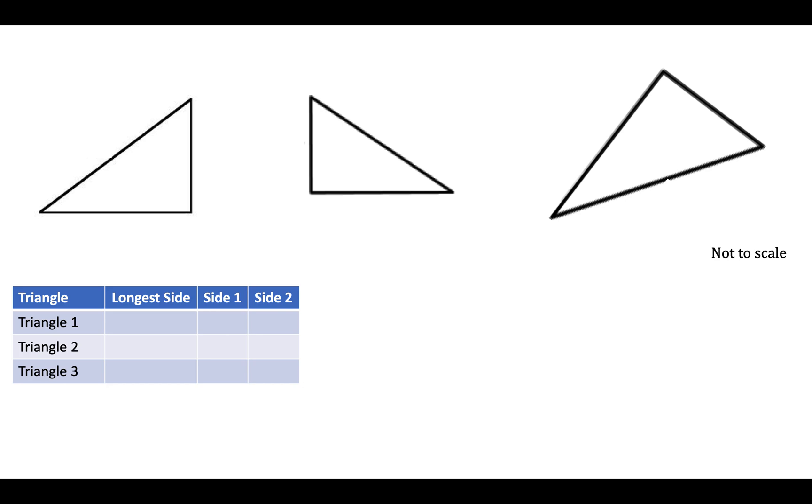If we look at each of these triangles separately and examine the lengths of the sides, I'm just going to tell you what the lengths are. For triangle one, our longest side is 5 units, we've got a side which measures 4 units, and the last length is 3 units. For triangle two, our measurements are 13, 12, and 5 units. And for triangle three, our measurements are 17, 15, and 8.